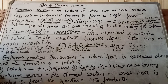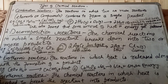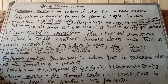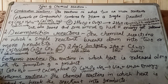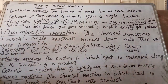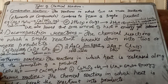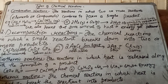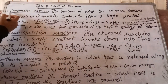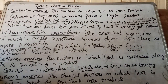Now coming to the lecture — we are on chapter one of chemistry, which is Chemical Equations and Chemical Reactions. In the previous lecture we discussed chemical equations, and today our topic is types of chemical reactions. We have different types of chemical reactions; let's discuss some of them.